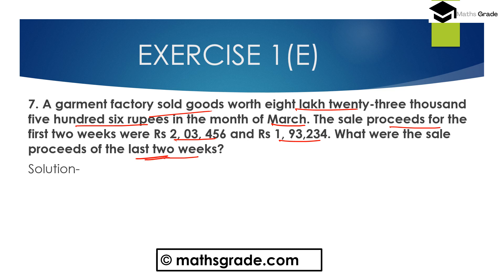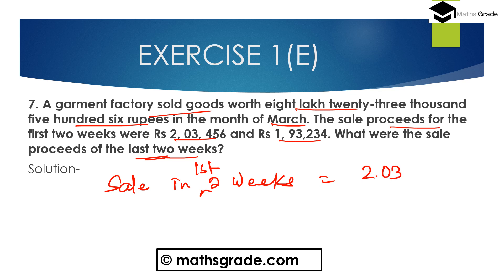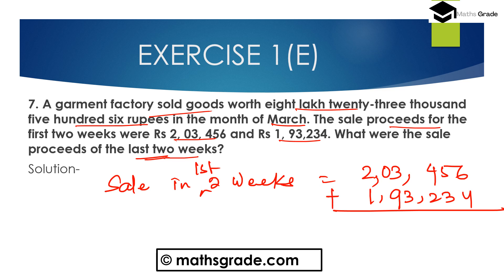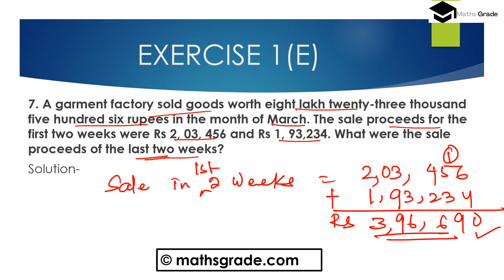First, add these two numbers for the first two weeks. In the first two weeks, the sales were 2 lakh 3,456 and 1 lakh 93,234. The total sale in the first two weeks is 3 lakh 96,690 rupees.